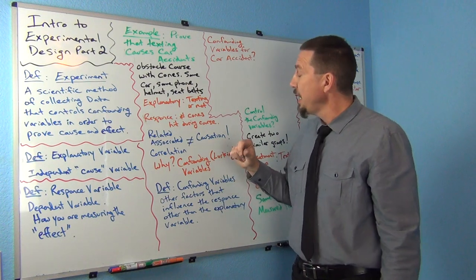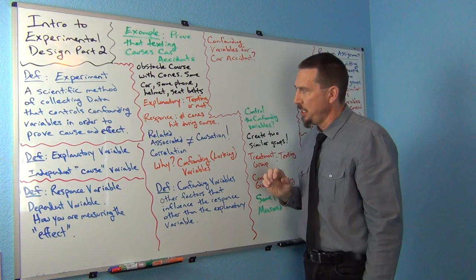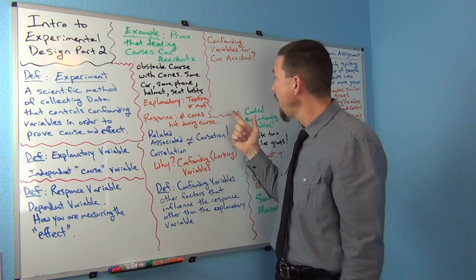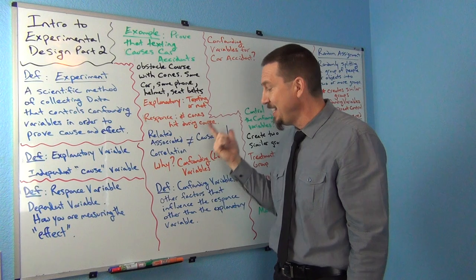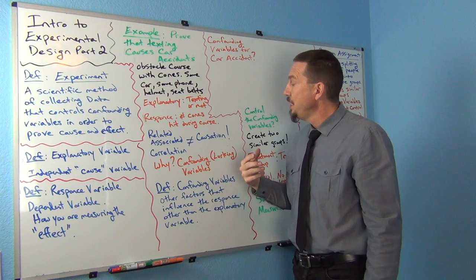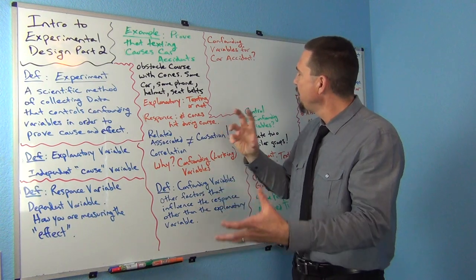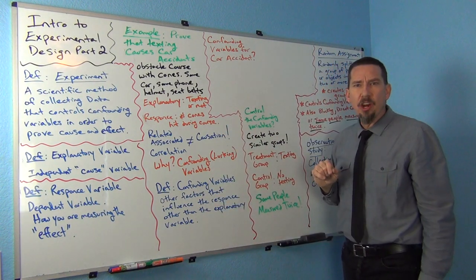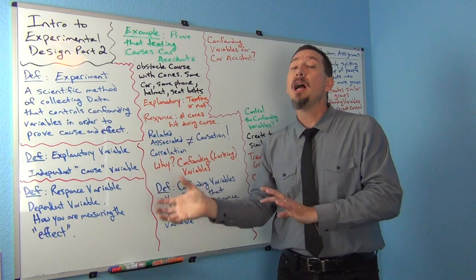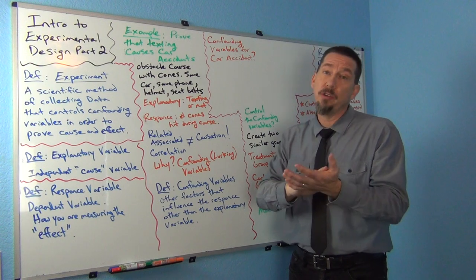I probably want to control for confounding variables, so let's think about what some of those are. They should probably be texting the same sentence so I'd make them all text the same exact thing. There are a lot of confounding variables that go into somebody having a car accident. Can you think of something that might influence a person having a car accident other than whether or not they were texting? Remember, the explanatory variable is not a confounding variable — it's something besides that which might influence your response.